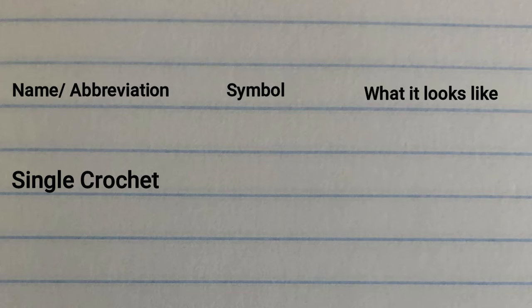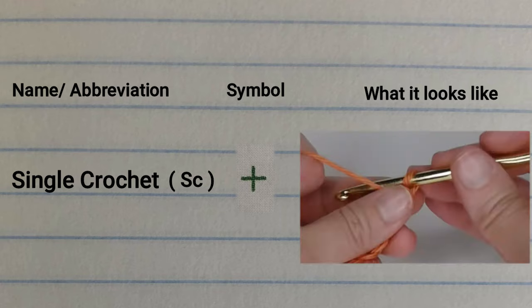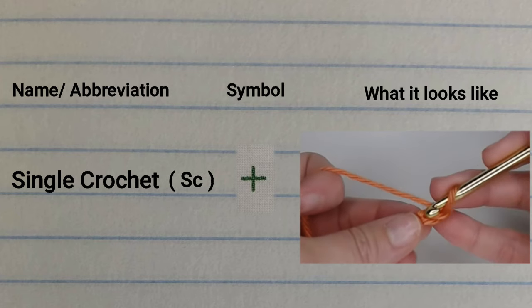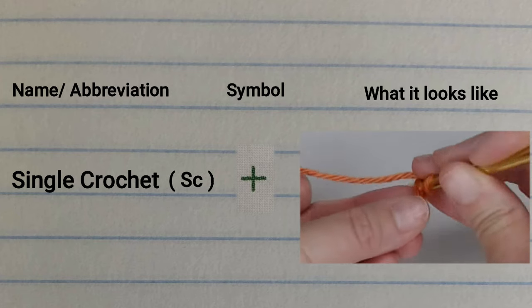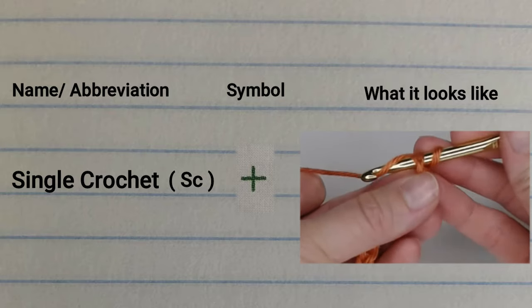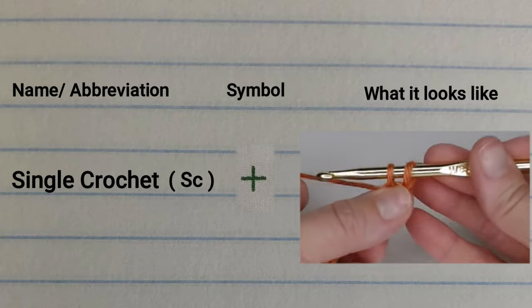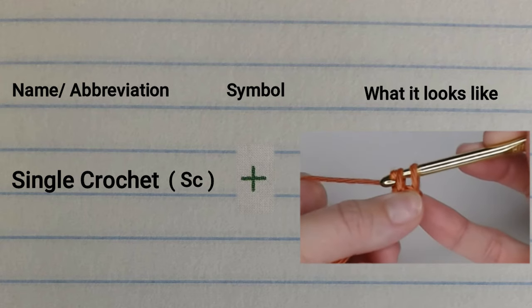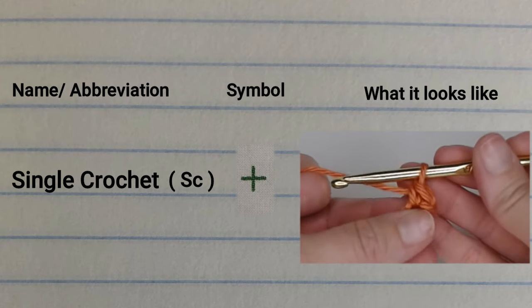Next we have the single crochet stitch. Here is the abbreviation for single crochet, here is the symbol for a single crochet, and this is what a single crochet stitch actually looks like. You insert your crochet hook into the stitch, yarn over, pull through — you'll have two loops on your crochet hook — yarn over, pull through both loops, and that is one single crochet.